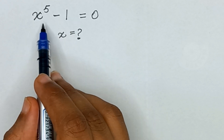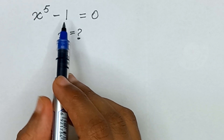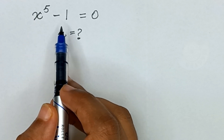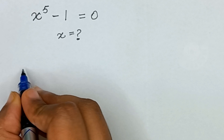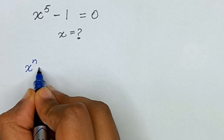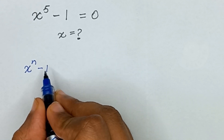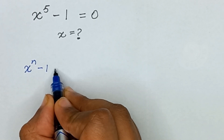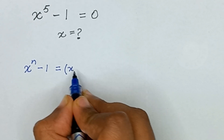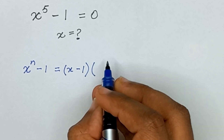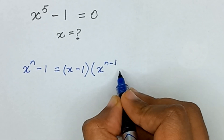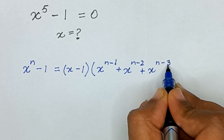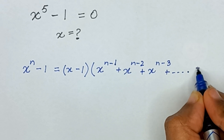So here, the left hand side x raised to the power 5 minus 1 can be factorized, and the right hand side is equal to 0. We have a formula: x raised to the power n minus 1 can always be factorized where n is a positive integer. And x raised to the power n minus 1 is equal to x minus 1 times x raised to the power n minus 1 plus x raised to the power n minus 2 plus x raised to the power n minus 3, and so on, down to 1.